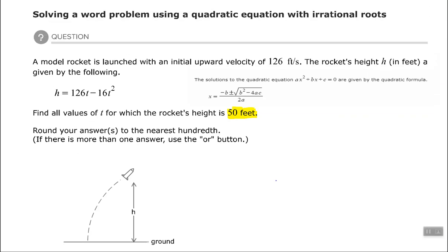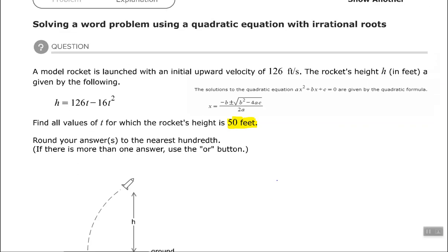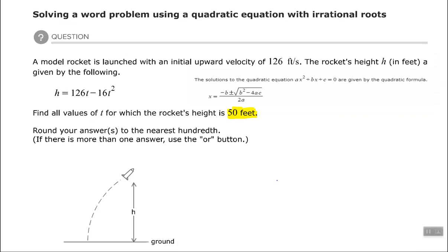Hey everyone, Arthur Morris here. In this video we're going to look at solving a word problem using a quadratic equation with rational roots. We have a model rocket that is launched with an initial upward velocity of 126 feet per second, and that's already included in the equation here with 126 times t, which represents time.